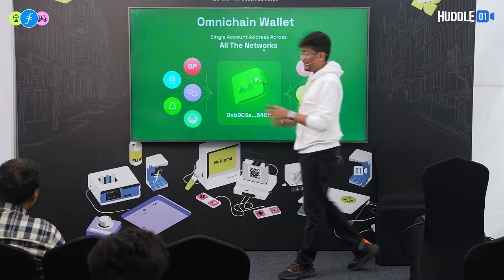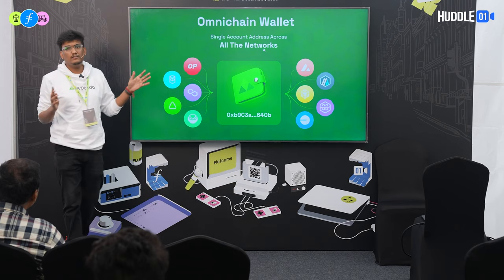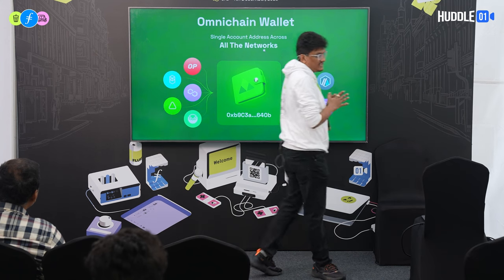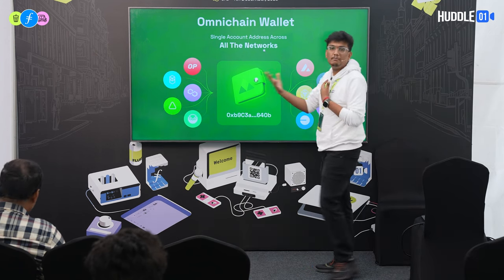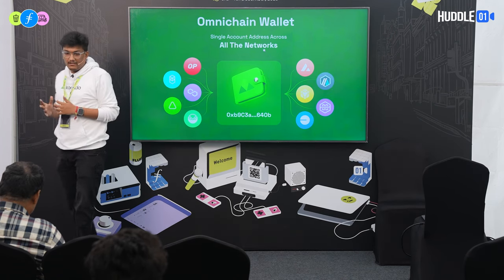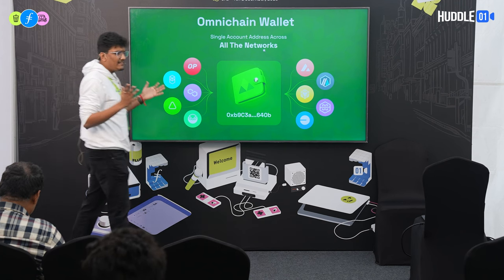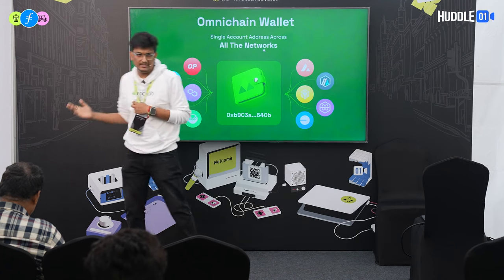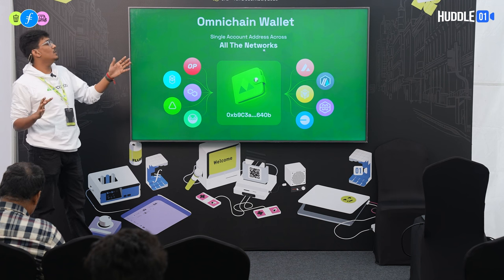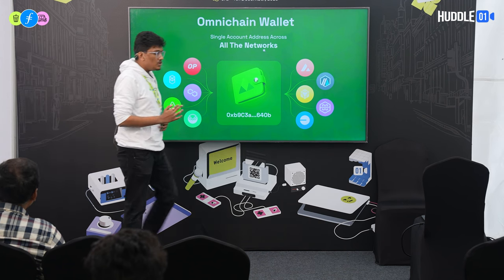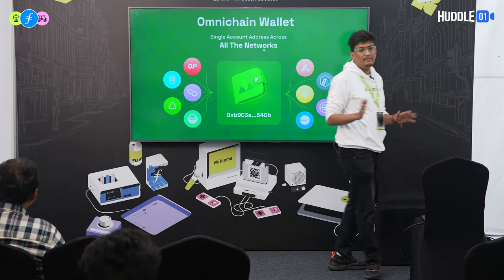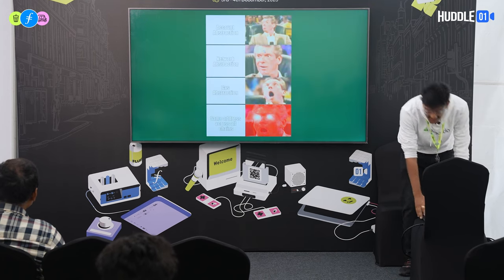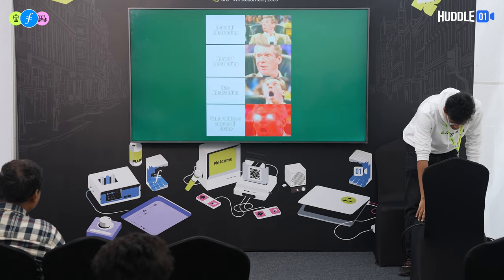The omni-chain wallet — the Optimism hack happened because Safe had a different address on different chains, creating confusion about where exactly it exists. We solve that issue by having a single account address across all chains that Avocado supports. Whether you're on Polygon or Arbitrum, you'll have the same address — like a single address, similar to an EOA.